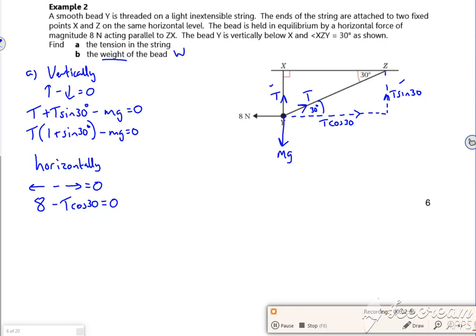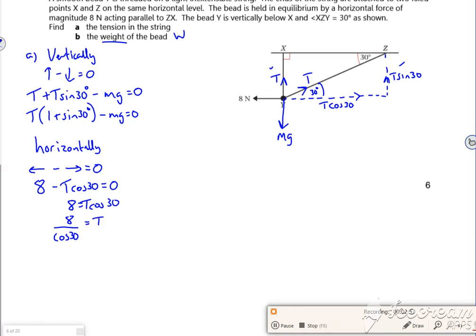So that kind of tells me that if I take the T cos 30 over, that 8 over cos 30 is my tension, which the completed pack says is 9.24 Newtons T.